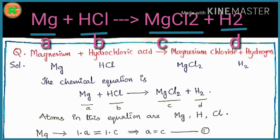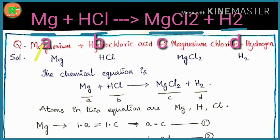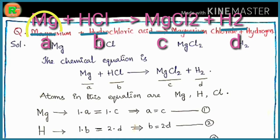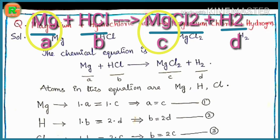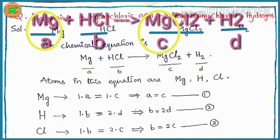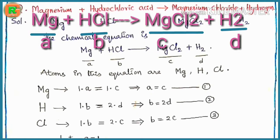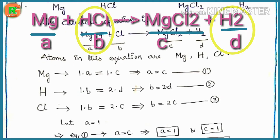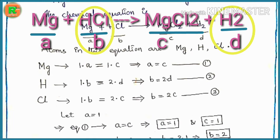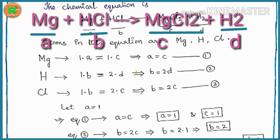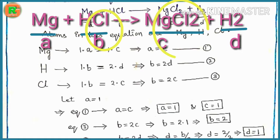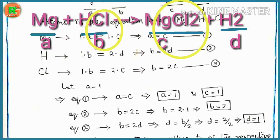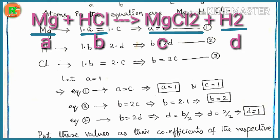We identify the atoms: magnesium, hydrogen, and chlorine. For magnesium, one atom in A equals one atom in C, so A = C — equation 1. For hydrogen, one atom in B on the left equals two atoms in D on the right, so B = 2D — equation 2. For chlorine, one atom in B on the left equals two atoms in C on the right, so B = 2C — equation 3.